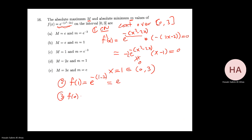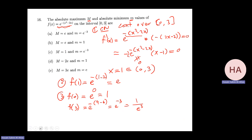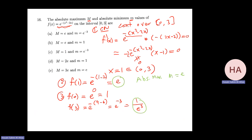Wait — the critical number is x equals 1. f(1) equals e to the power of (minus 1 minus 2) equals e to the minus 3. I check the endpoints. f(0) equals e to the power of 0 equals 1. f(3) equals e to the power of (minus 9 minus 6) equals e to the minus 15, which is 1 over e cubed. Since e is larger than 1 and 1/e cubed is less than 1, the absolute maximum is capital M equals e and the absolute minimum is small m equals e to the minus 3.